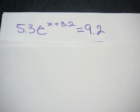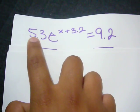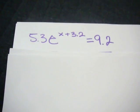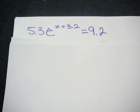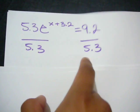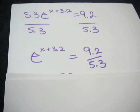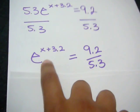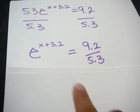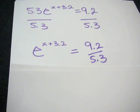What you have to do first is get rid of the 5.3. We're going to use simple algebra — to undo the multiplication between the number and the variable, we're going to divide by 5.3 on both sides. What you're left with is e to the power of x plus 3.2 is equal to 9.2 over 5.3.